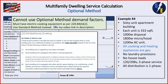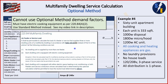Without electric cooking, we must use the standard method only. Looking at 220.84: it says it shall be permissible to calculate the load of a feeder or service supplying three or more dwelling units of a multifamily dwelling in accordance with table 220.84B instead of part three of this article — the standard method — if all conditions are met. Our problem is condition number two: each dwelling unit must be equipped with electric cooking equipment. Our cooking is gas, so we fail to meet that condition and cannot use the optional method.